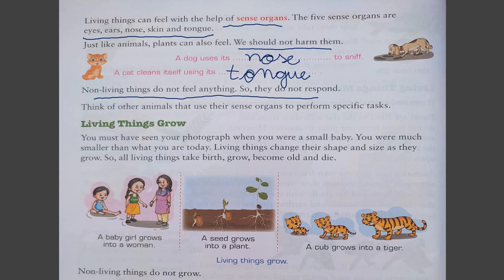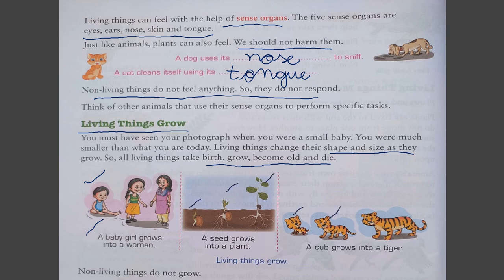Next property: living things grow whereas non-living things do not grow. You must have seen your photograph when you were a baby — you were much smaller than you are today. Living things change their shape and size as they grow. All living things take birth, grow, become old, and die. A baby girl grows into a woman, a seed grows into a plant and then a tree, and a cub grows into a tiger.